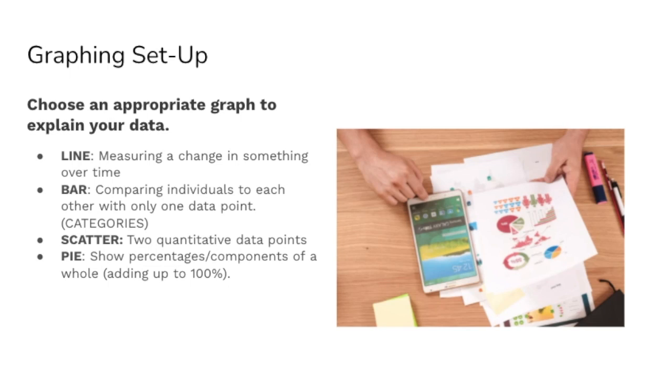I would predict that on the AP bio exam, you'd probably have to draw a line graph or a bar graph. Both of these can have error bars though, so make sure you watch out for those. It's unlikely you'll have to draw a pie graph, especially if they provide graphing paper or a graphing paper section for you on the exam. But make sure to note that if you need to show percentages or components of a whole that add up to 100%, a pie graph would be appropriate.